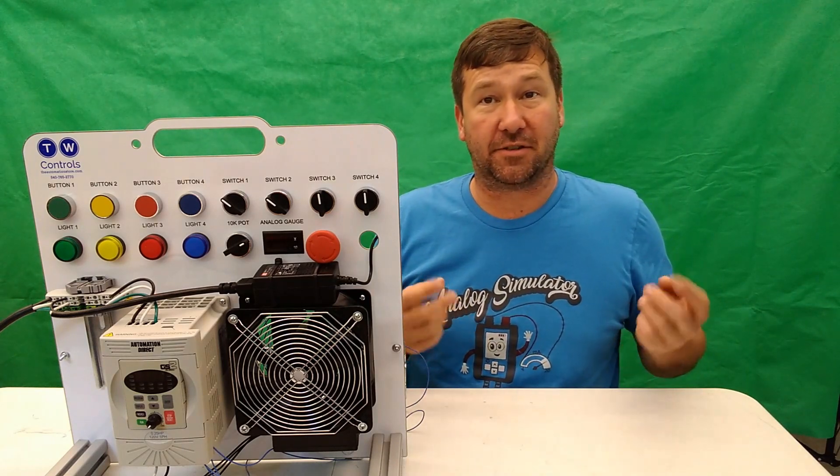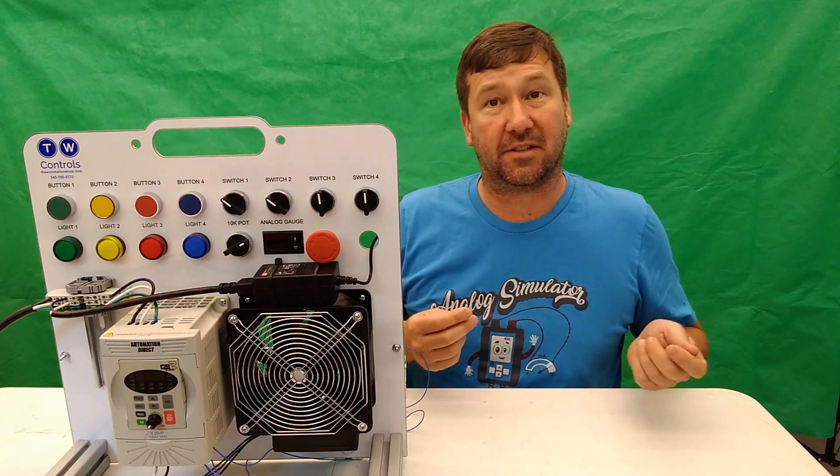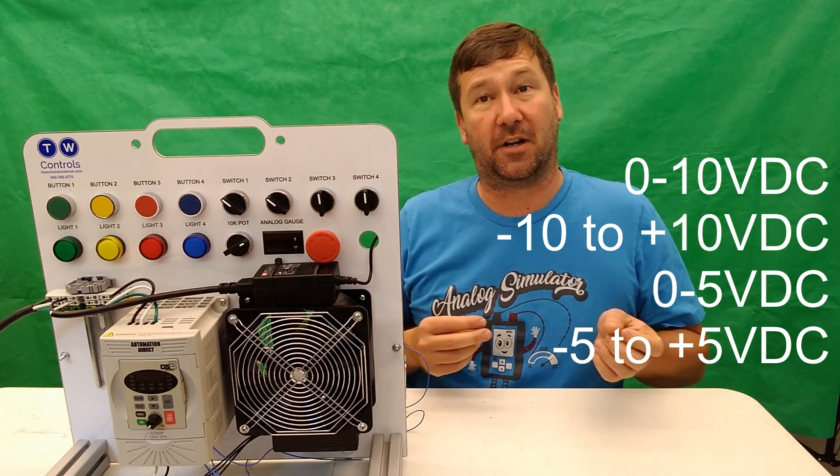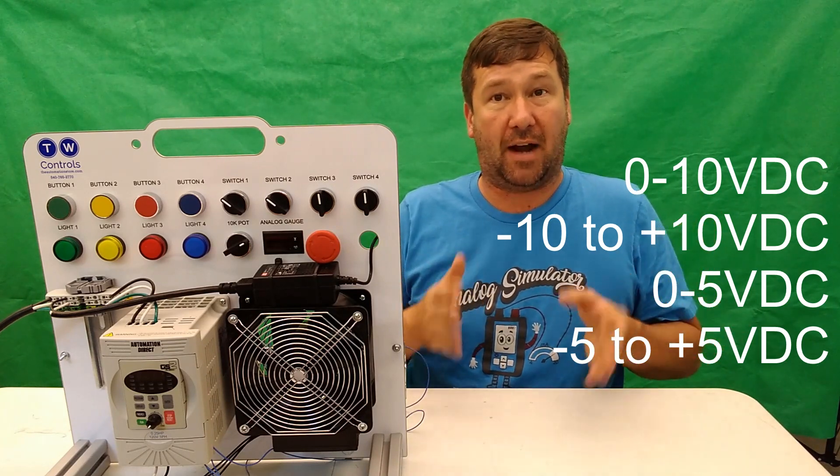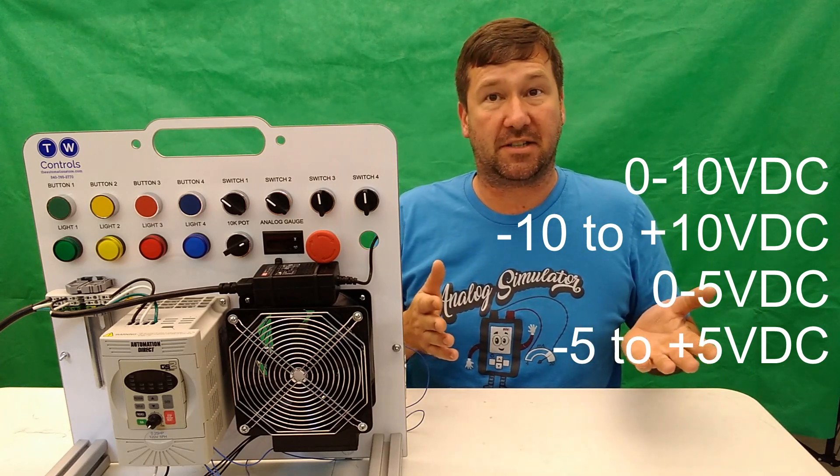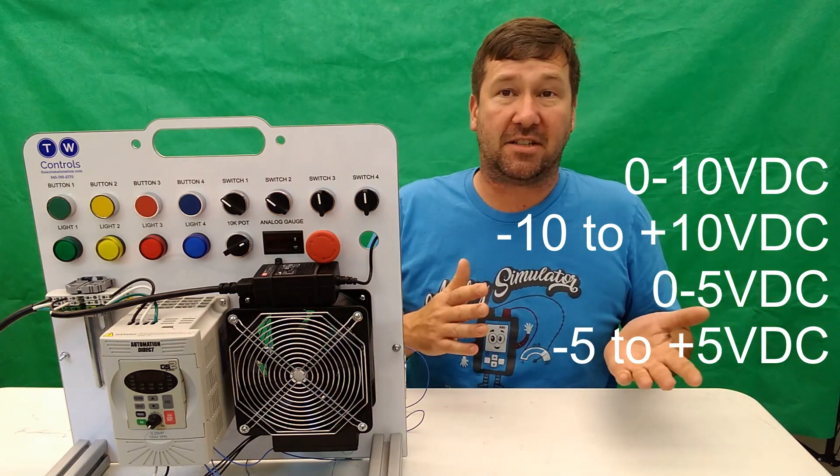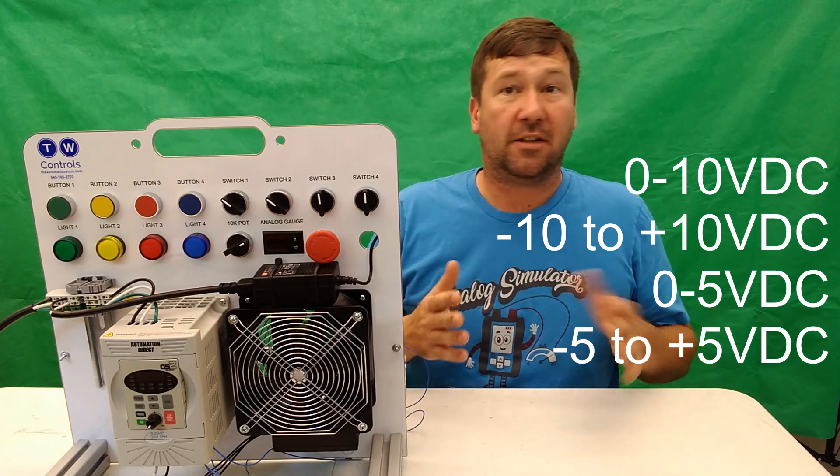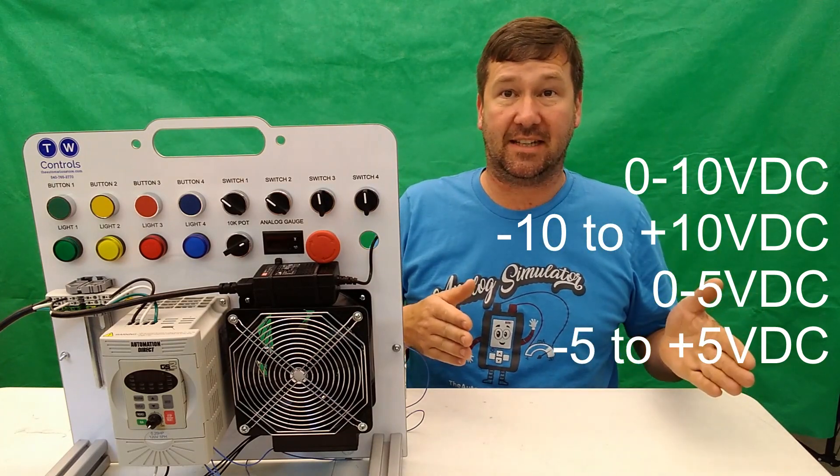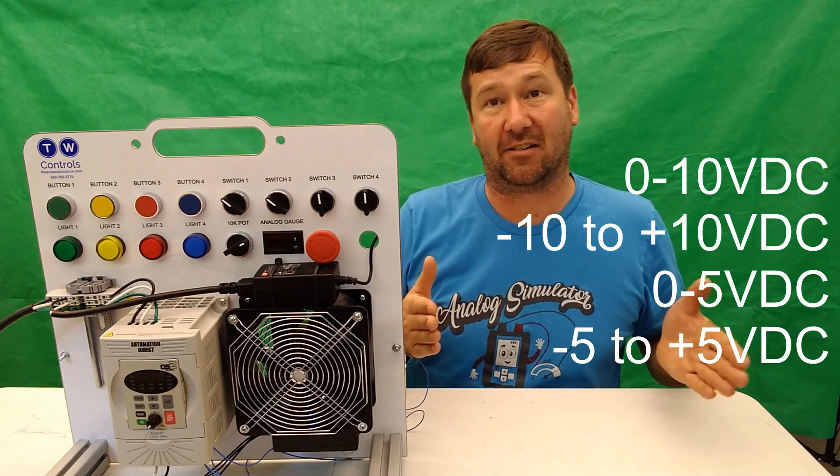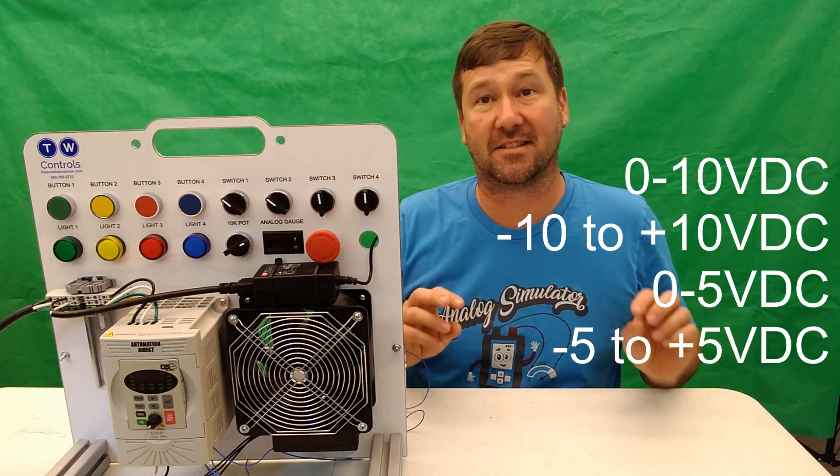Let's start with the voltage signal. Your typical analog voltage signal is going to be zero to 10 volts. You see a lot of this in drive applications where you're controlling drive speed. If you have an application that needs to go reverse, you'll typically see this signal reverse, making it a minus 10 to plus 10 analog signal, and this is used a lot in servo applications.